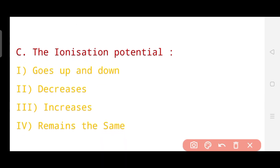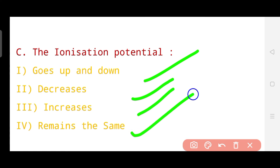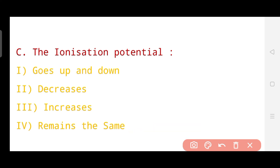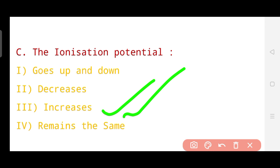Question number c is about ionization potential. What happens to the ionization potential when moving left to right — does it go up and down, decrease, increase, or remain the same? The correct answer is that ionization potential increases when we move across a period. I hope each one of you is enjoying the session and giving the correct answers.